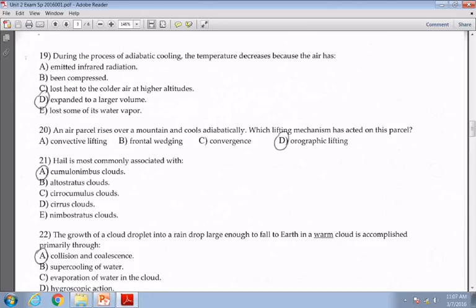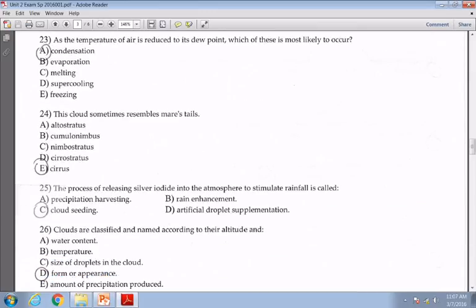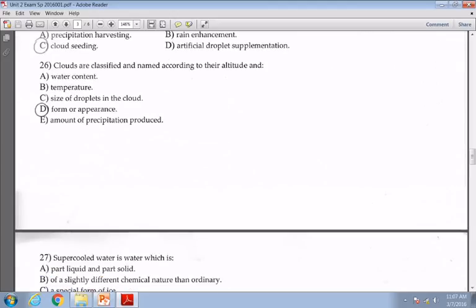Twenty-two, when in a warm cloud, the growth of the water droplet is called A, collision coalescence, is the best term there. For twenty-three, as the temperature is cooled to the dew point temperature, A, condensation is most likely to occur for twenty-three. Twenty-four, the mare's tails are those cirrus clouds, E. Twenty-five, they've toyed around with introducing silver iodide into the atmosphere. That was kind of like the crop duster sort of thing as part of C, cloud seeding. Question twenty-six, clouds are classified and named according to their elevation or altitude. The other criteria is what we call their form or appearance, the flat or fluffy. D is the best answer for twenty-six.